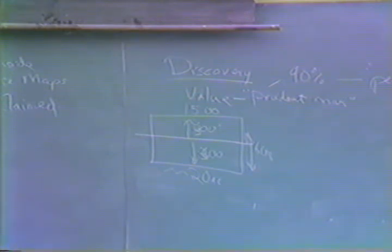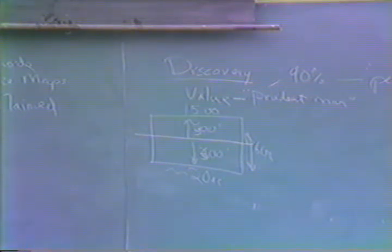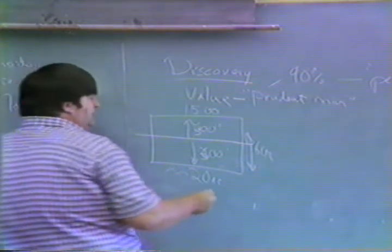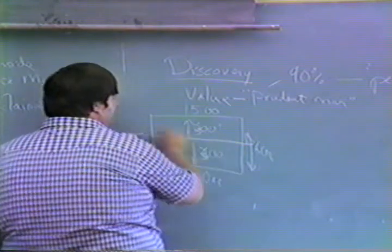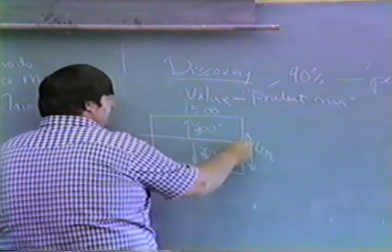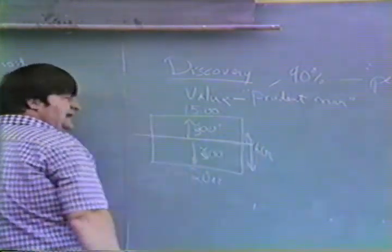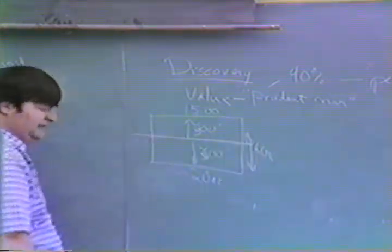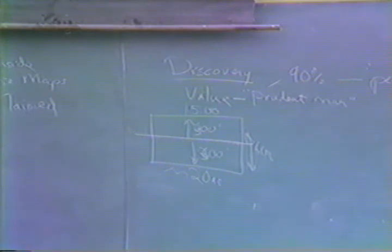A lode claim generally would be considered a hard rock claim, where you own the rock beneath it but not necessarily the loose material on top. In some areas you don't have a distinct vein, so you just claim it — usually the same 1,500 by 600 area — even though you don't have a vein.